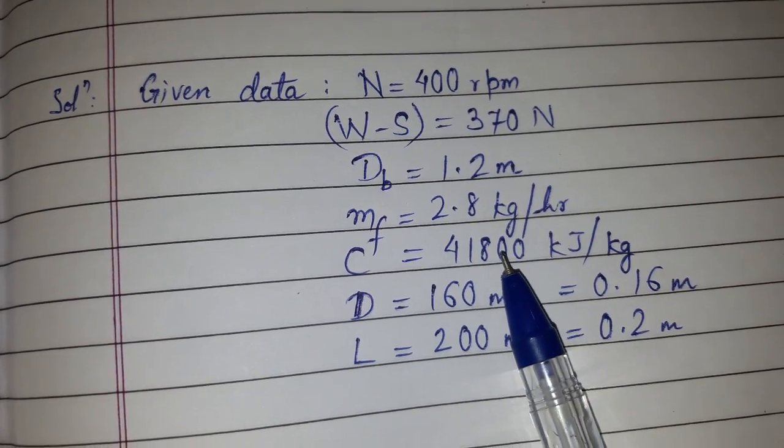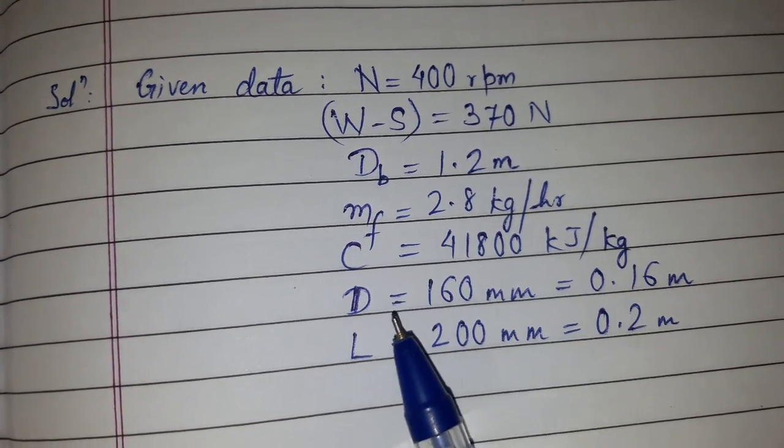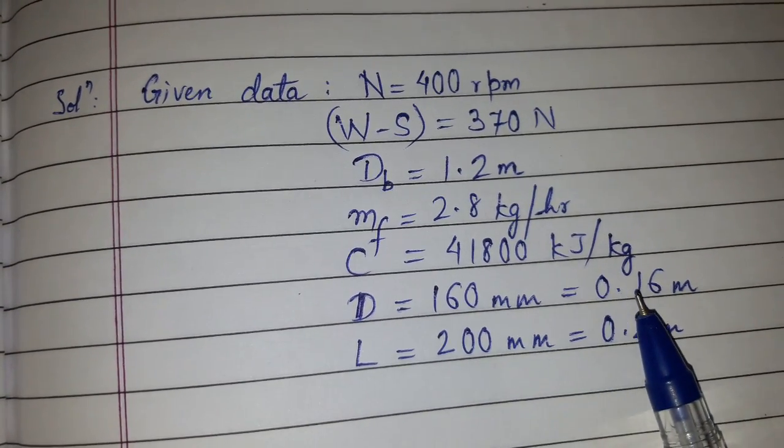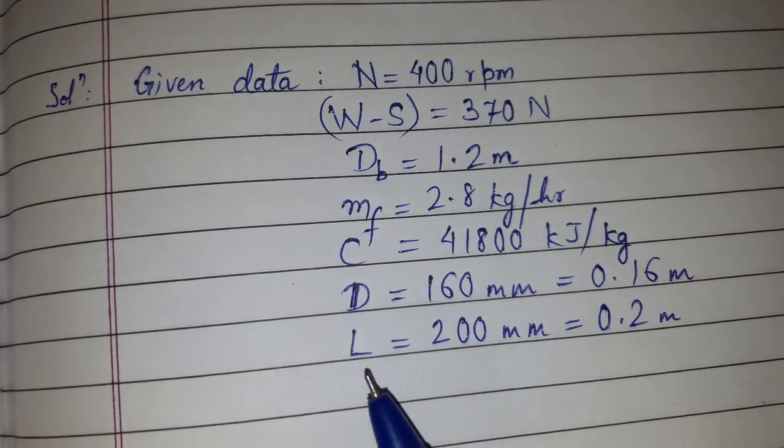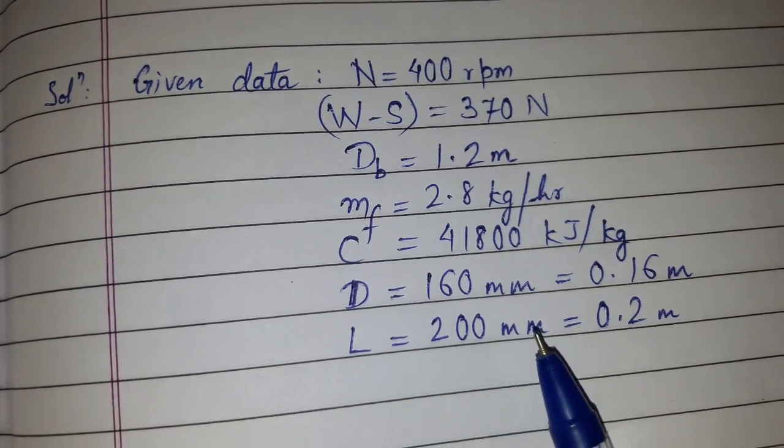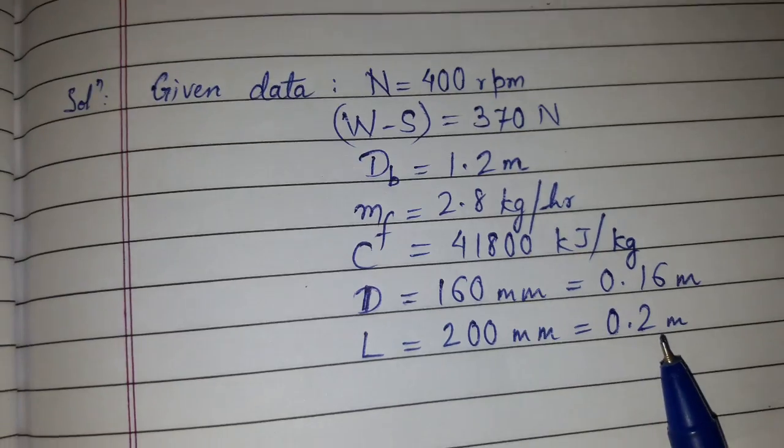C is given as 41,800 kJ/kg. D is given as 160 mm which we have converted into meter as 0.16 meter. L, that is the stroke of the piston, is given as 200 mm which we converted into meter as 0.2 meter.